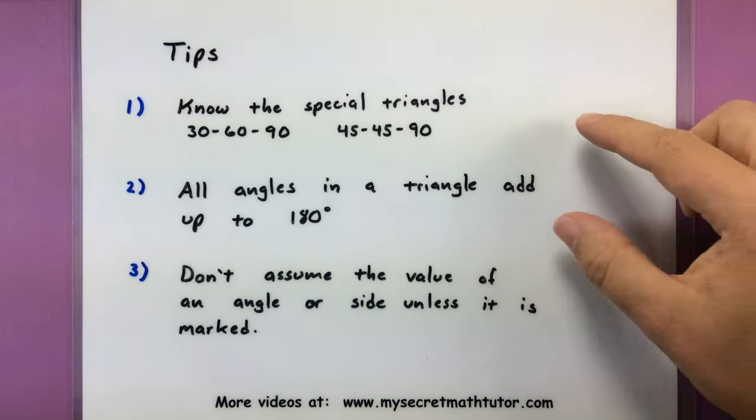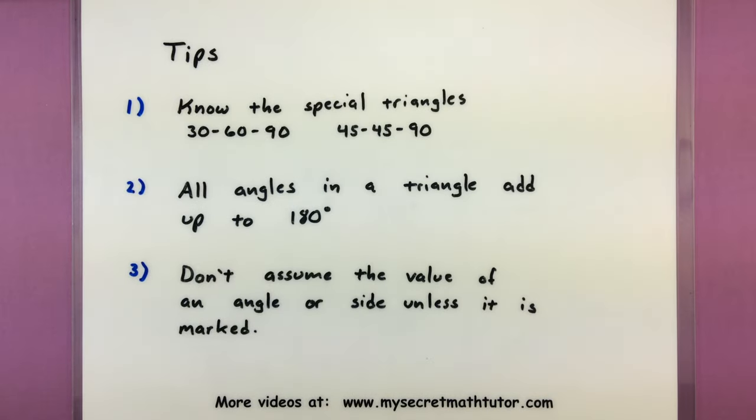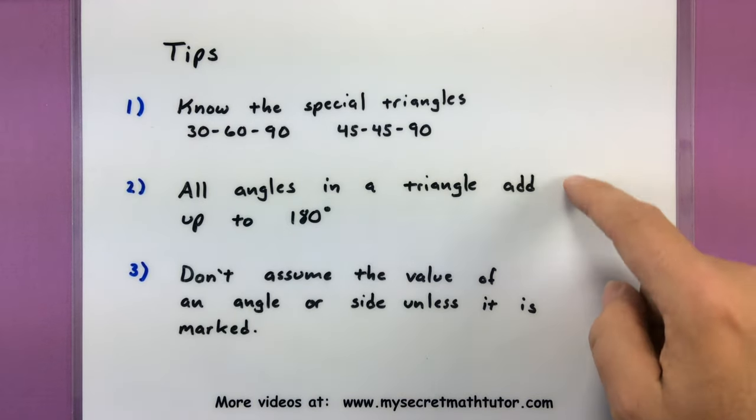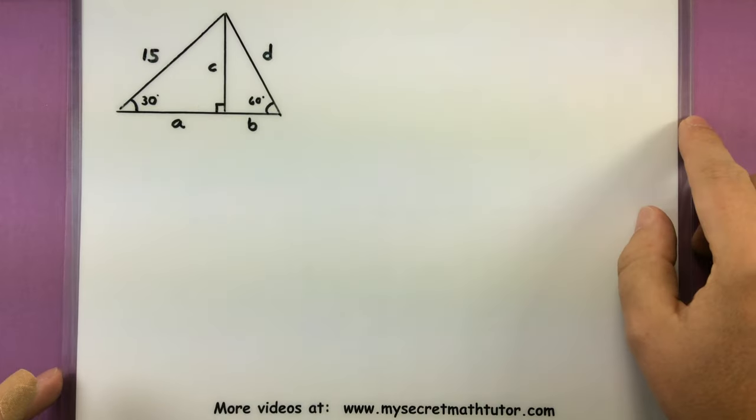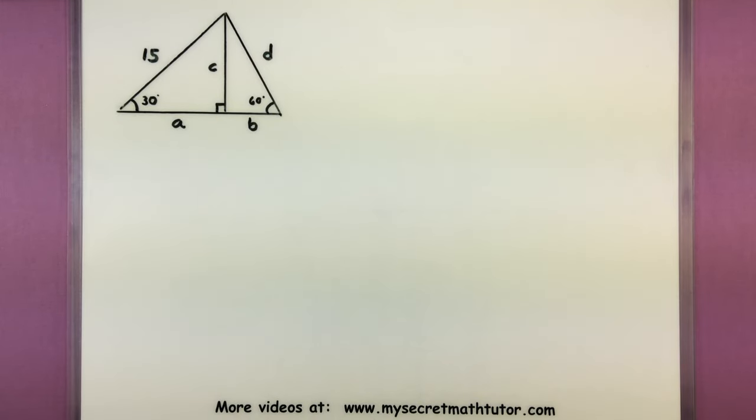Now of course you might use other things rather than just the special triangles and the fact that they all add up to 180. You might end up using stuff like the Pythagorean theorem or other trigonometric identities when finding the sides. The more information you know the easier this process gets, but just these first two will probably get you pretty far. So let's go ahead and try a couple of examples of finding the missing values and you'll see how this plays a part.